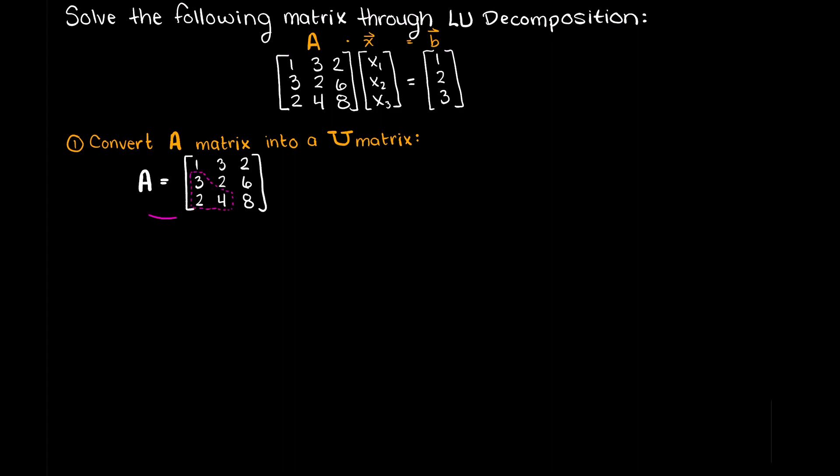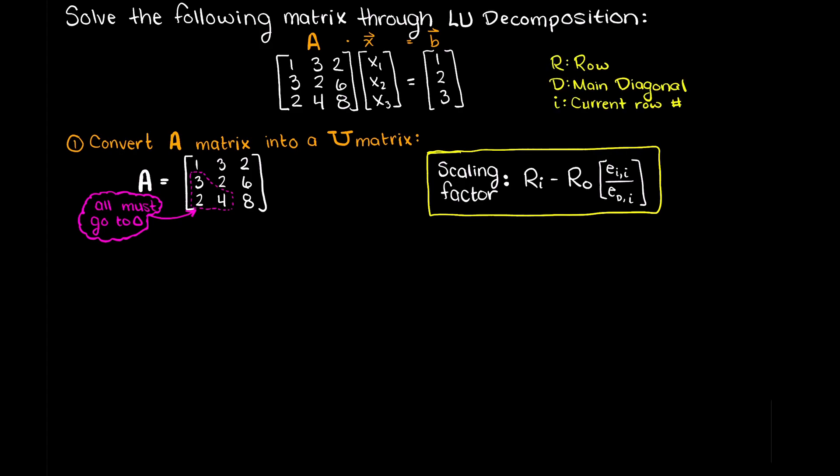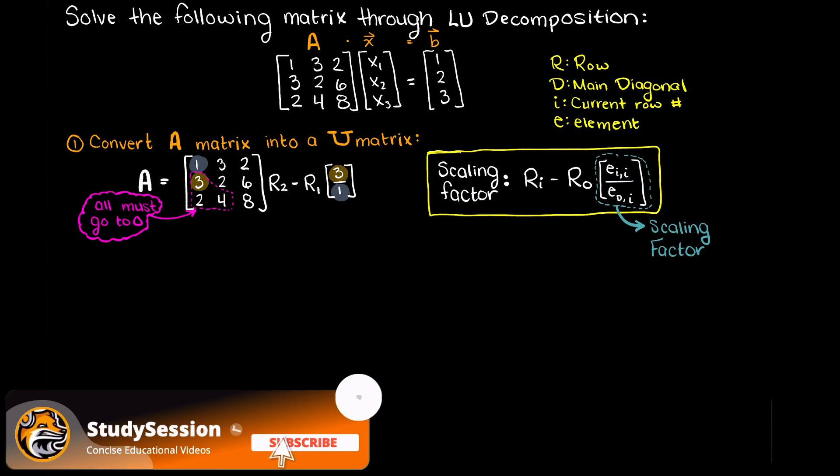Getting started, we are going to reduce all elements below our diagonal in the first column to zero. We do this by using the following formula for each row. In practice it works like this: we want this element to become zero, therefore we say row 2 minus row 1 times our scaling factor of this element over the element of our main diagonal in this column.